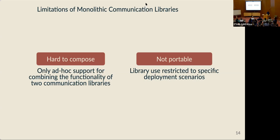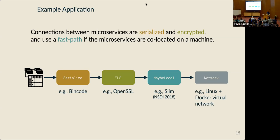To explain why Bertha is useful, I'll explain two drawbacks of the monolithic communication library approach: a lack of composability and a lack of portability. By composability, I mean the ability to use two or more potentially unrelated libraries together in the same application. By portability, I mean the ability for applications to run correctly no matter what the structure of the underlying network is. Let's look at an example microservice application that runs within a container, wants network connections to provide serialization for a convenient application object interface, encryption for security, and routing rules such that if two containers are on the same machine, communication should bypass virtual networking and use an optimized fast path.